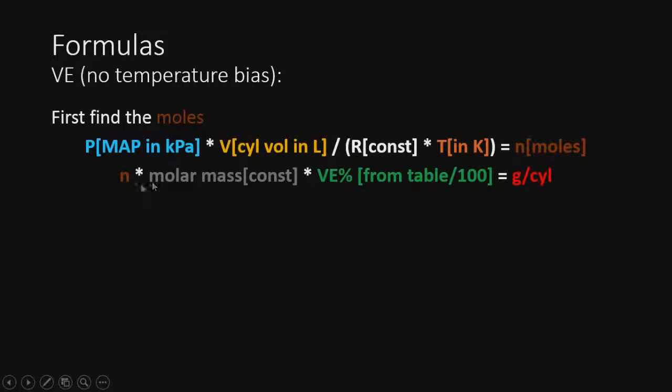So first we find this number and then we're going to take the number and we're going to multiply the molar mass, which is the 28.97 constant, which is technically not a constant because there's humidity in there and it's going to change a little bit, which makes this slightly inaccurate. Anyway, so we're going to multiply that by the VE percent. If you divide anything by a hundred, you're going to get it in percent.